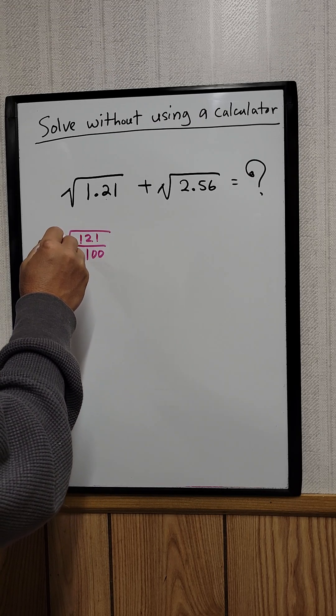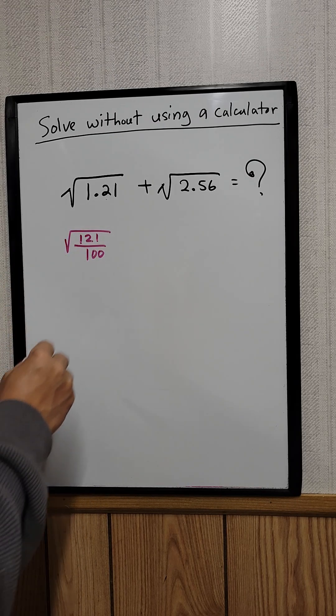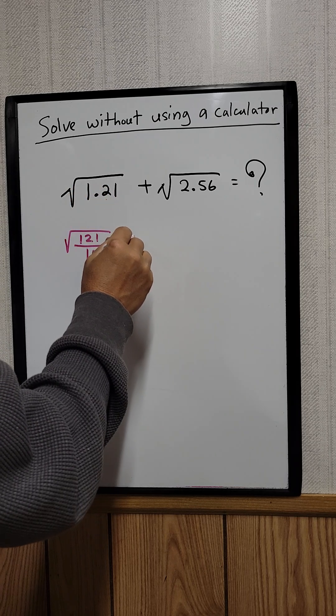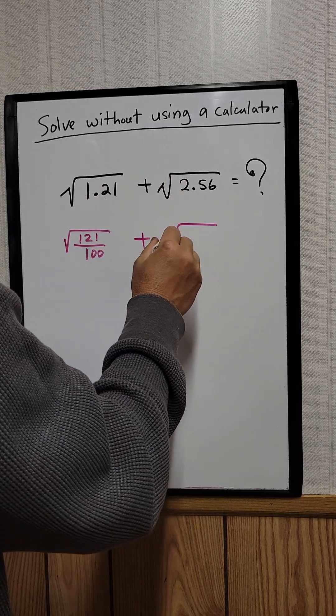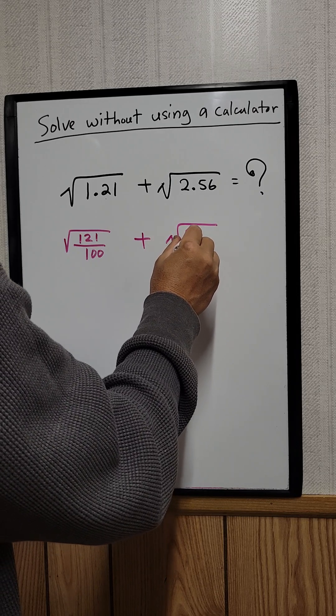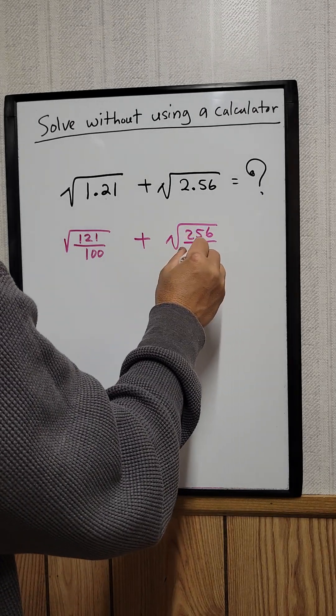If you take 121 divided by 100, it is equal to 1.21. And then plus the same thing, the square root of 256 divided by 100.